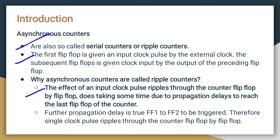In a synchronous counter, if all flip-flops have the clock, there is no delay on the output side. But in the asynchronous counter, there is a ripple — meaning there is a propagation delay to reach the last flip-flop because there is no common clock. The content shifts flip-flop by flip-flop to produce the output.